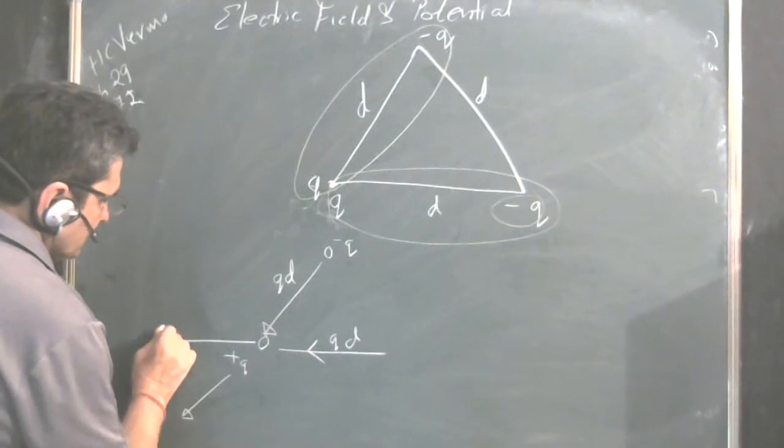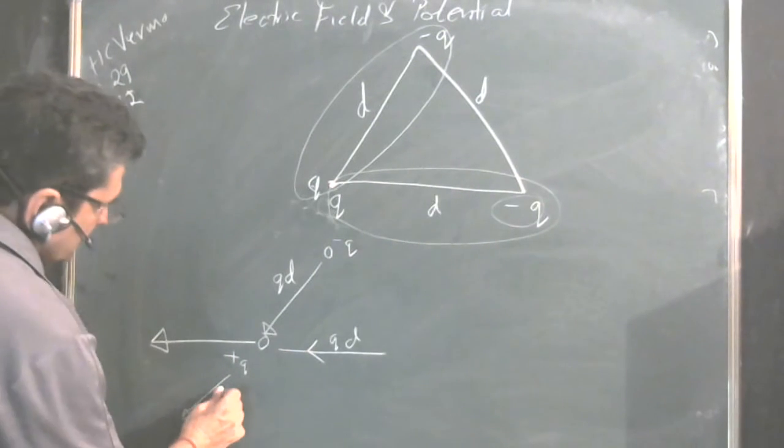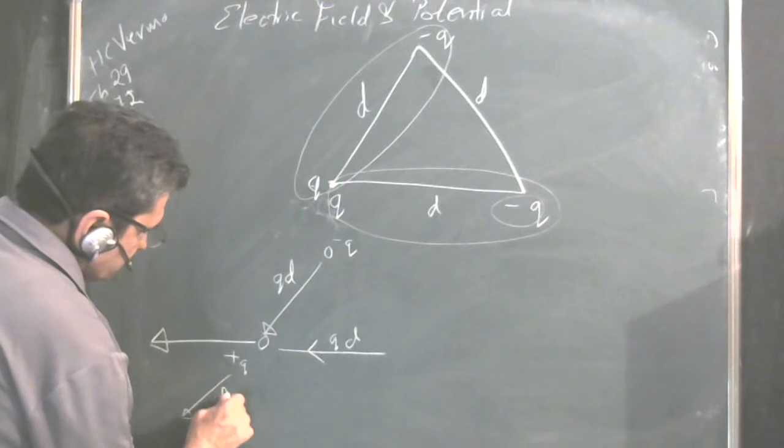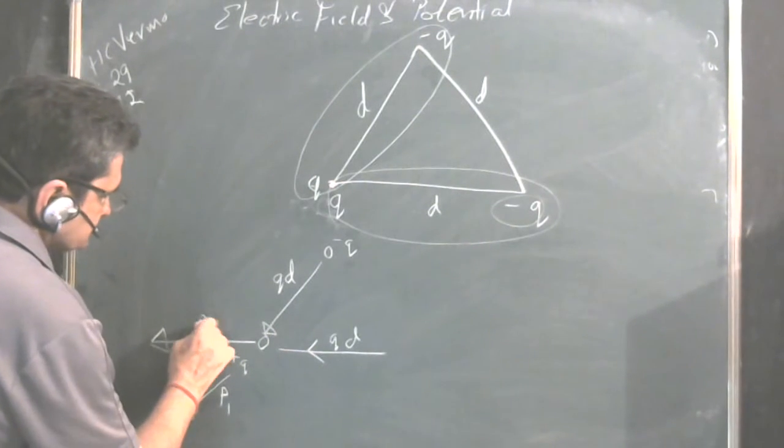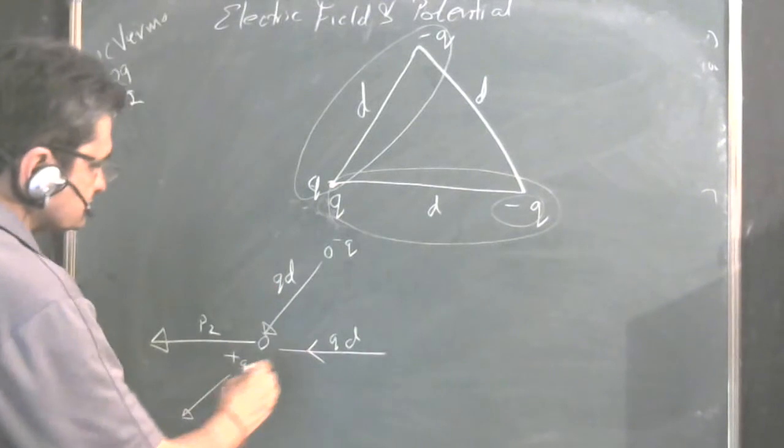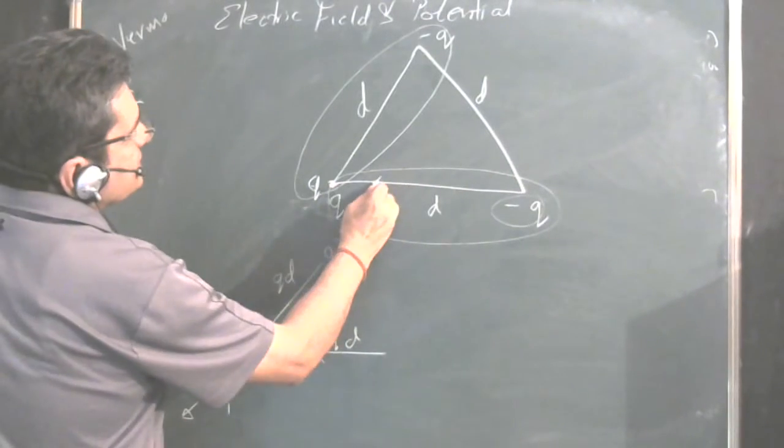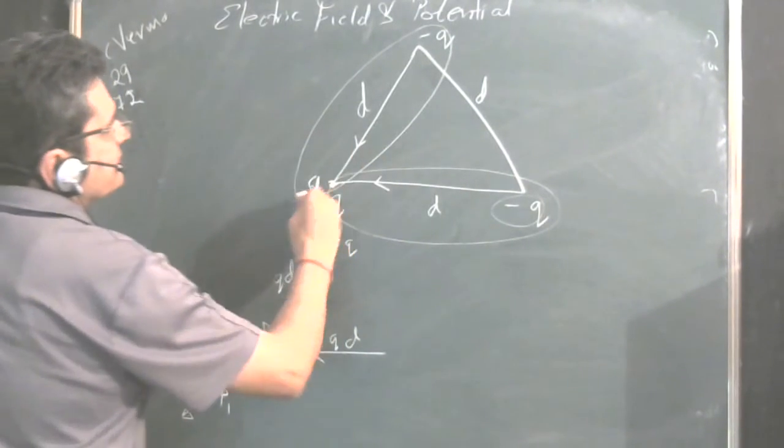So you have two dipole moments. Let me write this as P1 and P2. So both magnitudes are same and they are along the sides of this equilateral triangle.